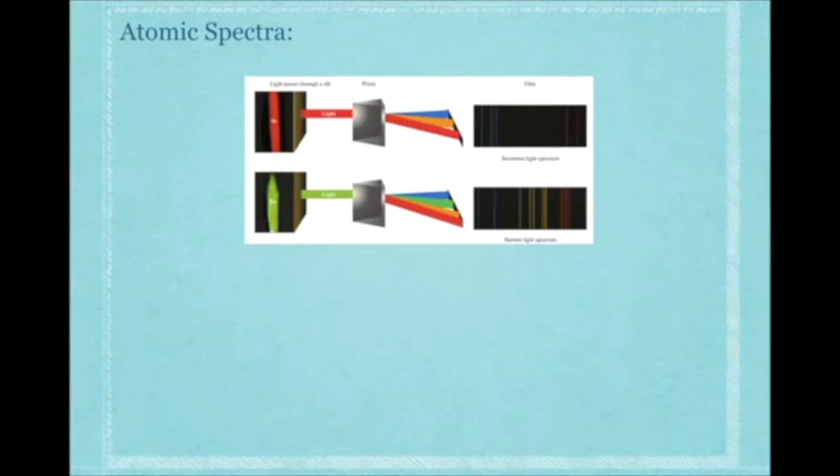If we excite, for example, barium, the color you would see without dividing all of those colors up using a prism like they do in this diagram, you would see green. However, that green is made up of all of those individual colors—the blue, the green, the yellow, the orange—all of those specific colors that are produced when electrons release specific amounts of energy.